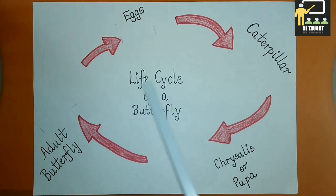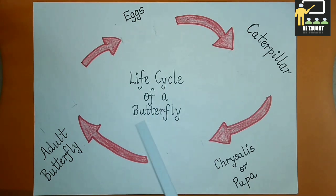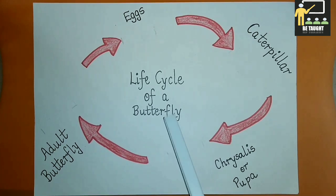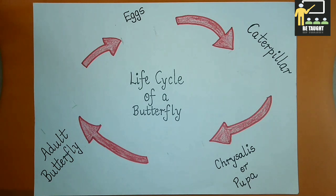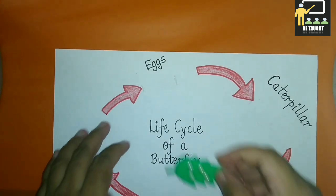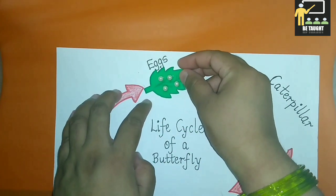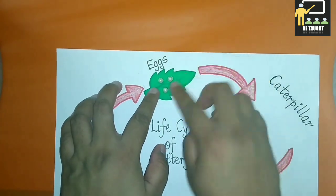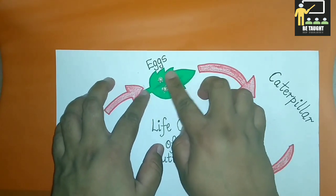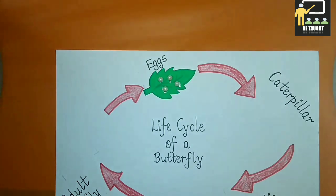Life cycle of a butterfly. There are different stages. The first stage is the eggs. A butterfly lays eggs on the leaves of a plant. These eggs hatch and young ones called larvae or caterpillars come out of the eggs.